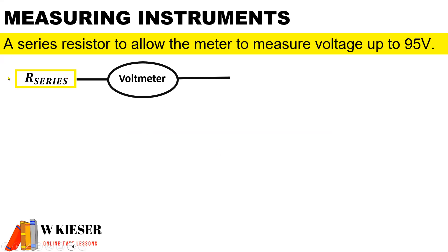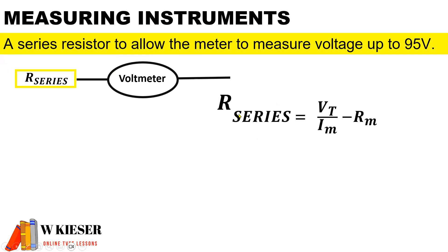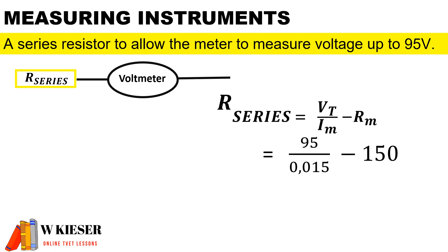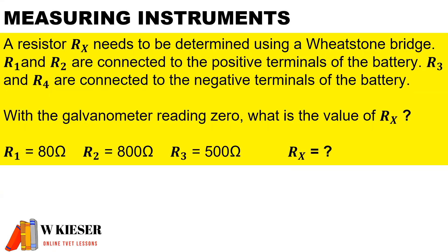In order for our galvanometer to measure voltage, we put a resistor in series with the voltmeter, and this is to divide the voltage. The formula we use to calculate the value of the series resistor is the supply voltage divided by the current of the meter, minus the resistance of the meter. The total voltage being measured is up to 95 volts, the current through the meter is 15 milliamps, and the resistance of the meter is 150 ohms. Therefore the value of the series resistor is 6183.33 ohms.